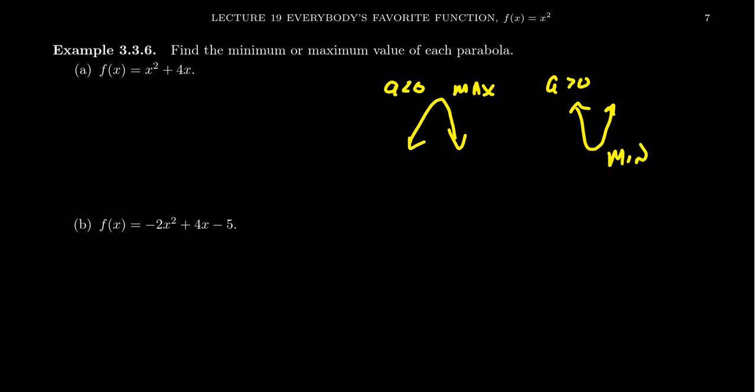Now to find the vertex, we're going to use the following formula. h equals negative b over 2a, and then k is going to equal f of h. We just do the evaluation there.